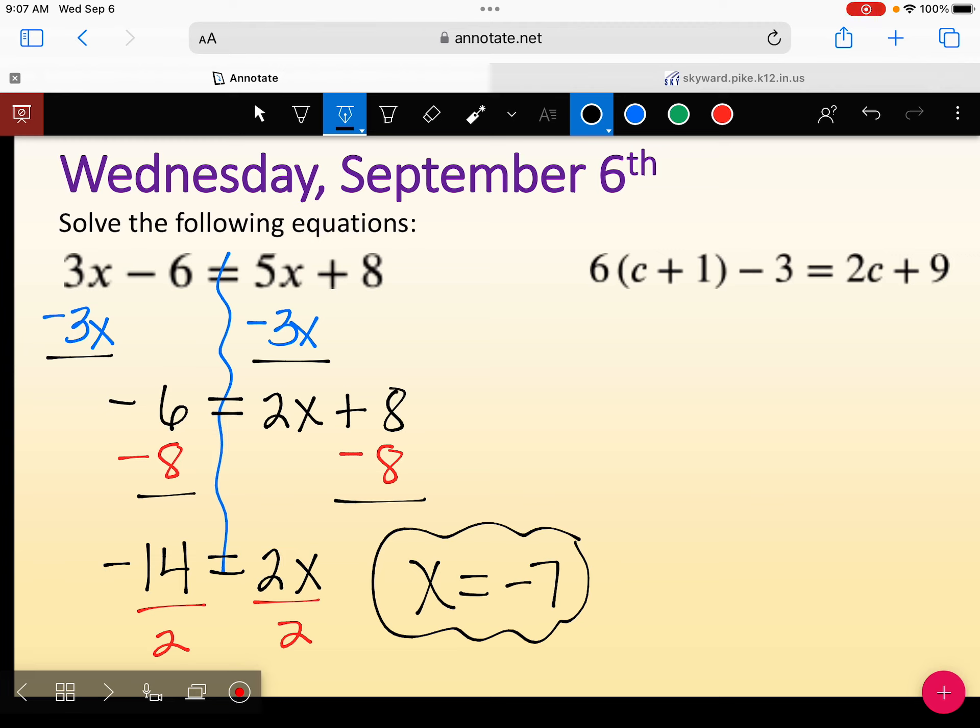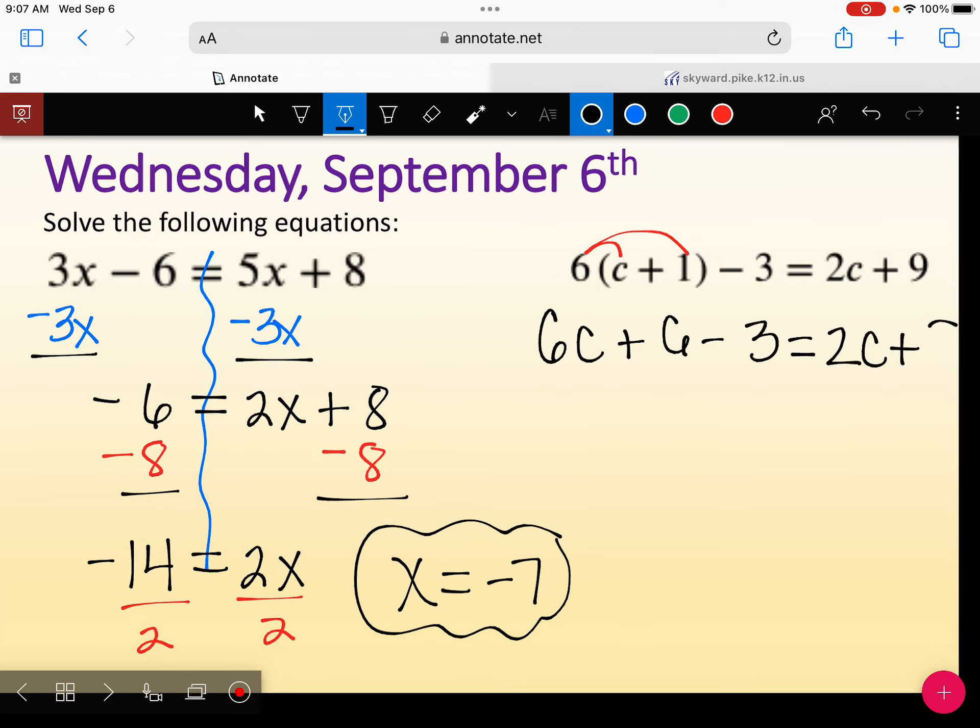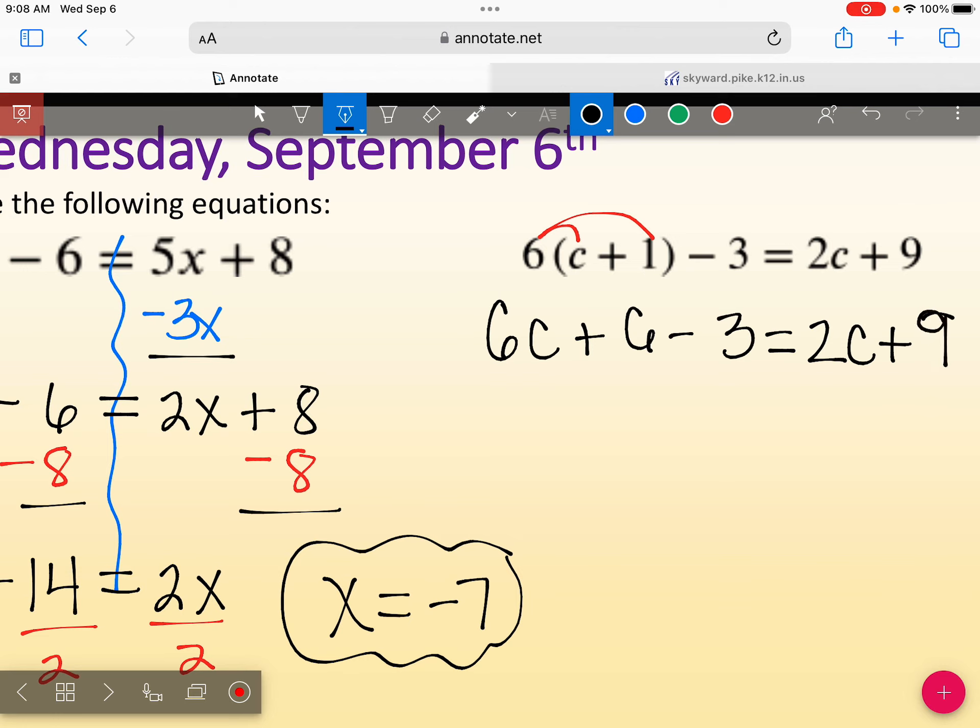So let's work through it. Your first step should be to multiply your parentheses by 6. So that would be 6c. And anytime there's a variable that's not x, if you want to make it x, you can. So 6c plus 6 minus 3 equals 2c plus 9. Combine your like terms. So when you combine your like terms, that would be the 6 and the negative 3. So that would be 6c. And then 6 minus 3 is what? What is 6 minus 3? Positive 3.